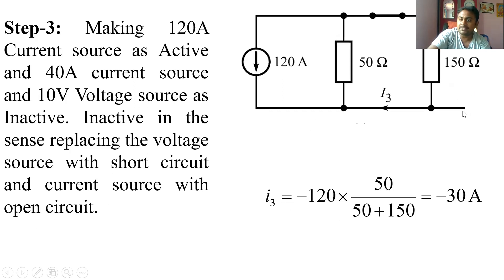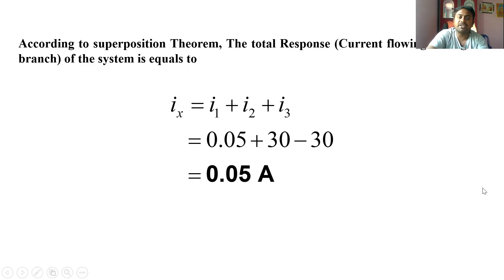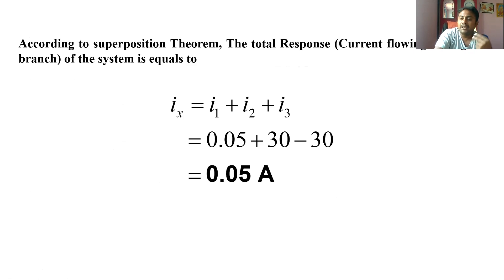In Step 3, the 120 A current source is active, the 40 A current source is open circuit, and the 10 V voltage source is short circuit. Applying the current division rule, the current direction through the 50 Ω branch is opposite to the reference, so I3 = −120 × (50) / (50 + 150) = −30 A. By the Superposition Theorem, total current = 0.05 + 30 − 30 = 0.05 A.